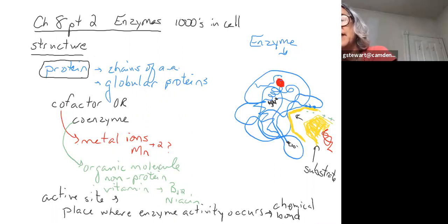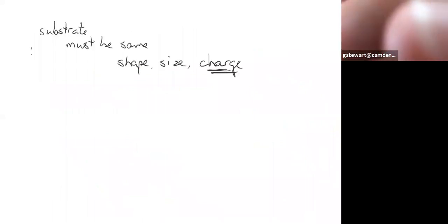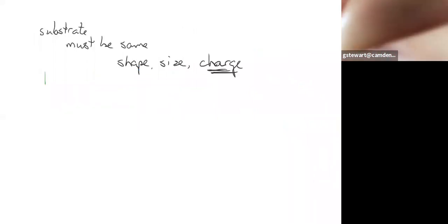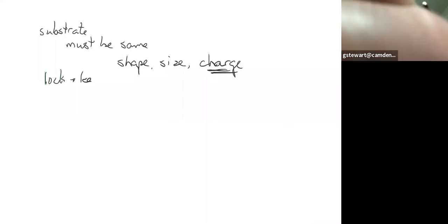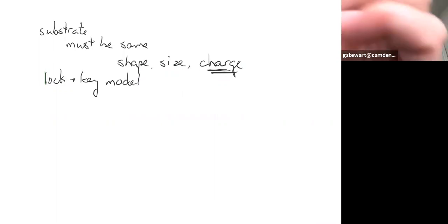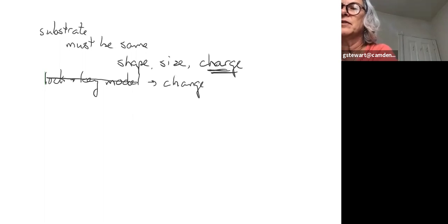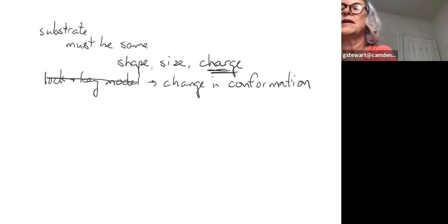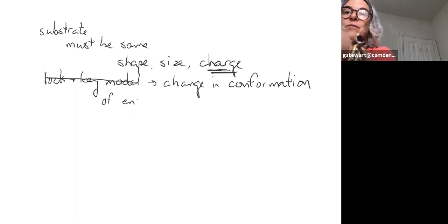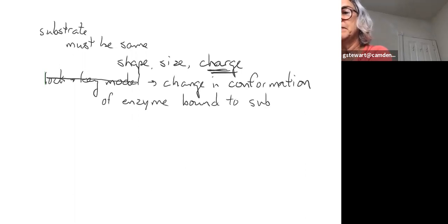Once the substrate fits into the enzyme — many of you have learned this as the lock-and-key model, which is a bit old-fashioned — we now refer to the shape change, or change in conformation, that occurs when the enzyme binds its substrate as the induced fit model.